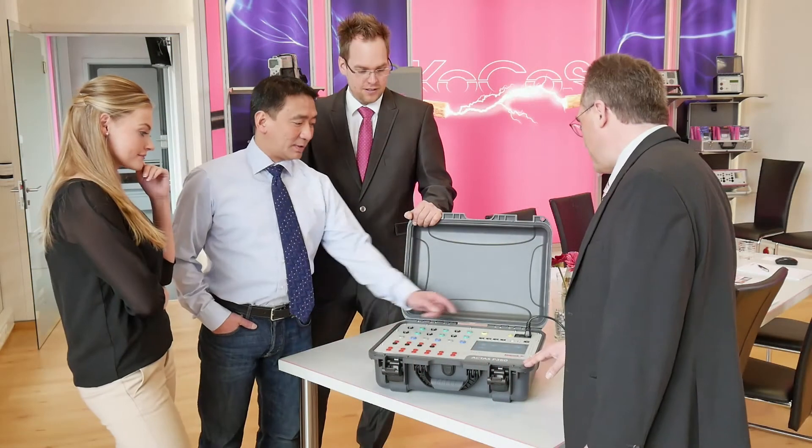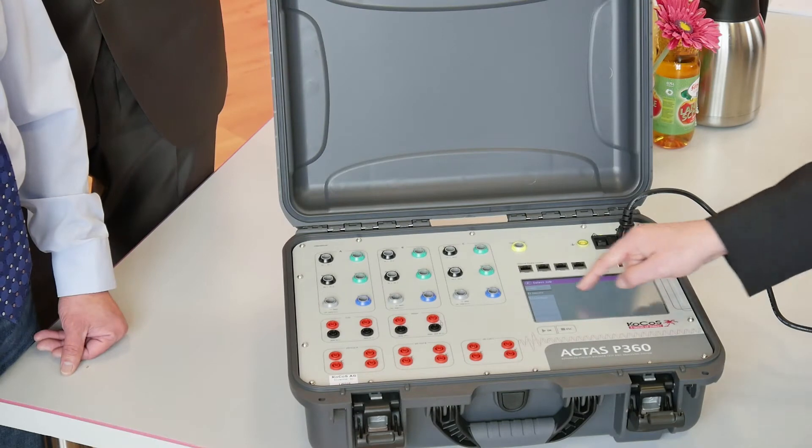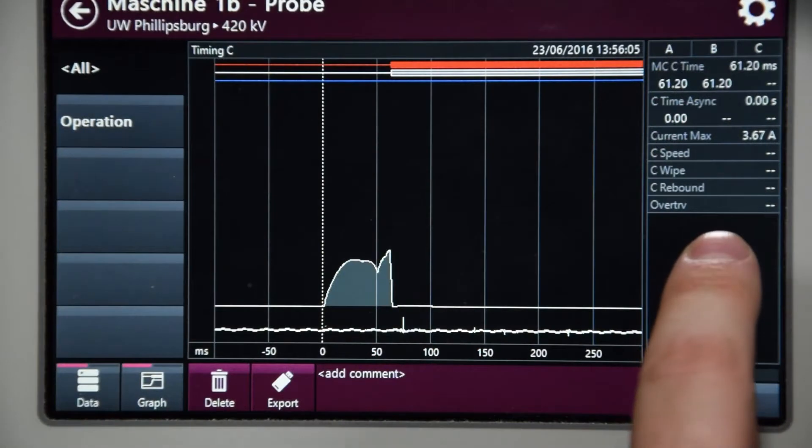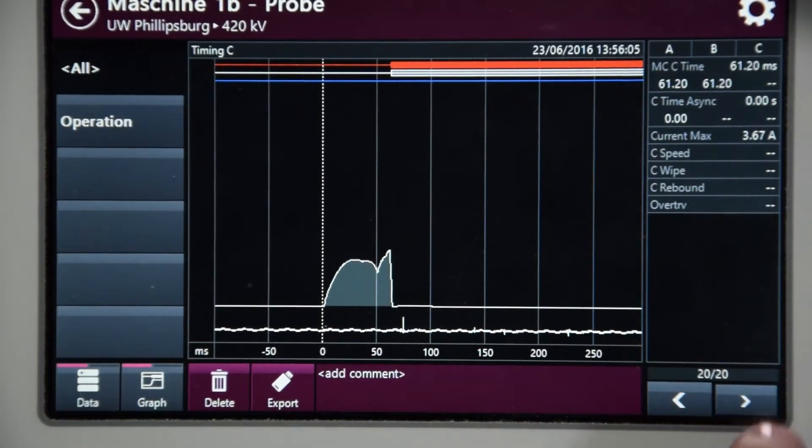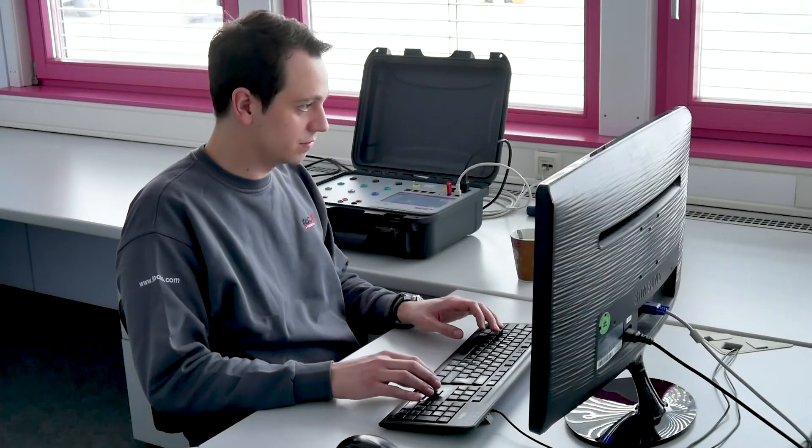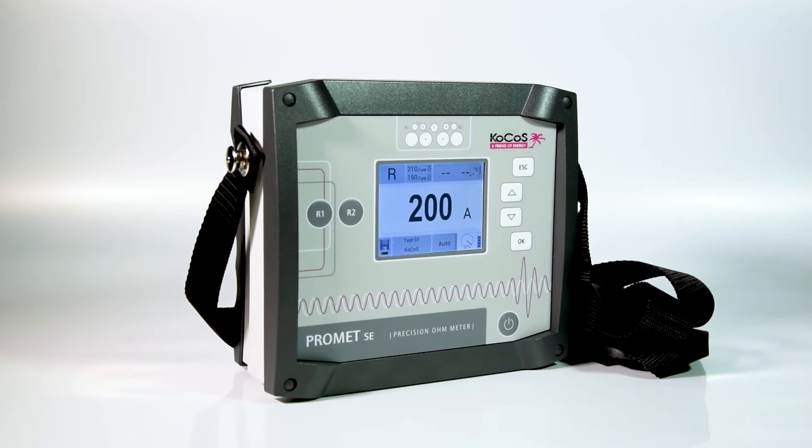The latest generation of portable test systems are Actis P360 and P260. These devices have a rugged design and intuitive software. They can be used as standalone devices or operated remotely with a PC. All meters can be connected directly to the Actis test systems for control.